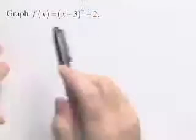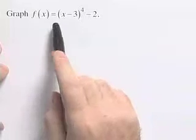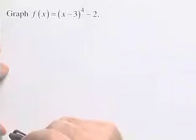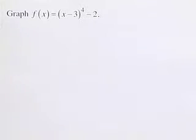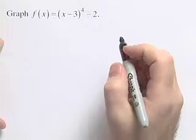In this next problem we're going to graph a function. We're asked to graph the function f of x equals x minus 3 to the 4th power minus 2. We're going to do that using our techniques for shifting, stretching, compressing, and reflecting.